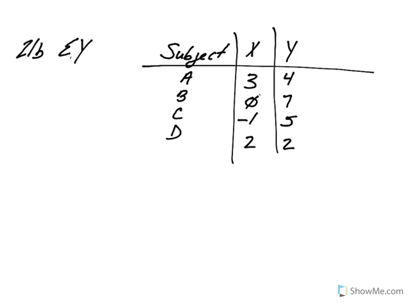21b says take the sum of Y. So we go to the Y column and simply take the summation of those values. Our Y values are 4 plus 7 is 11, plus 5 is 16, plus 2 more would equal 18.